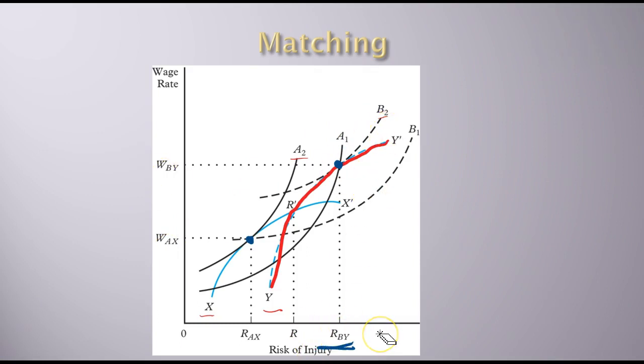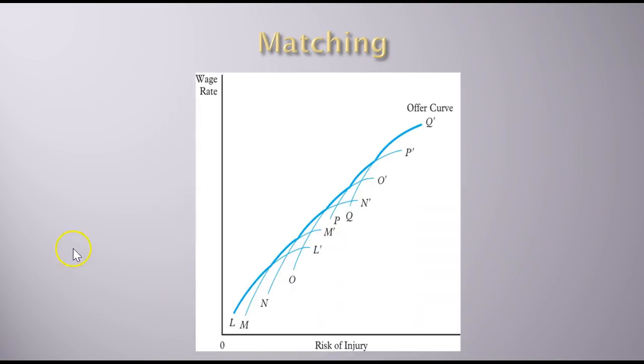W_BY, R_BY is an offer made by firm Y and accepted by person B. You have all of these offer curves. An offer curve—in the previous example we only looked at two workers and employers, but in reality there's many more. The offer curve ends up being all sets of offers that employers can make zero profit and still get an employee to accept the offer.